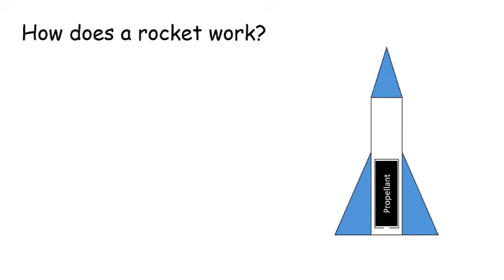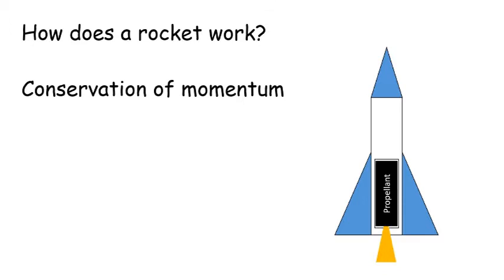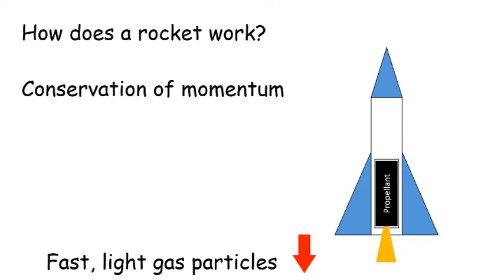The thrust that lifts the rocket is a result of a law of physics known as the conservation of momentum. The momentum before the propellant burns and after the propellant burns has to be the same. It's conserved. Before the propellant burns, the rocket's not moving, so there's no momentum. When the propellant burns, the particles of gas escaping out the nozzle carry momentum in the downward direction. Fast light gas particles have momentum downwards. There must be an equal amount of momentum upwards so that the total momentum will be zero. That upward momentum is carried by the rocket. The heavy slow rocket has an equal amount of momentum in an opposite direction to that of the fast light gas particles. Changing momentum and time is the same thing as force. And in this case, the force is known as the thrust. The thrust is the force that lifts the rocket.